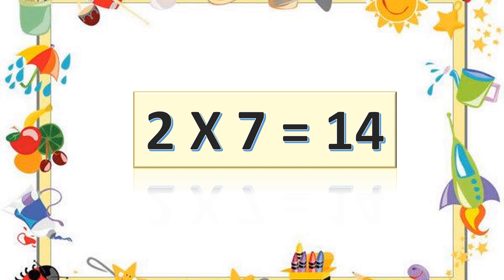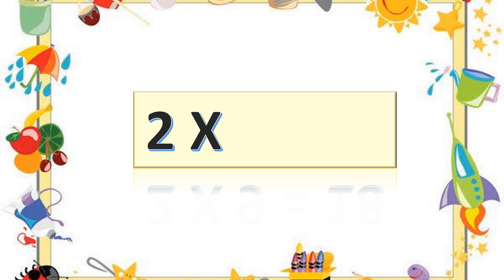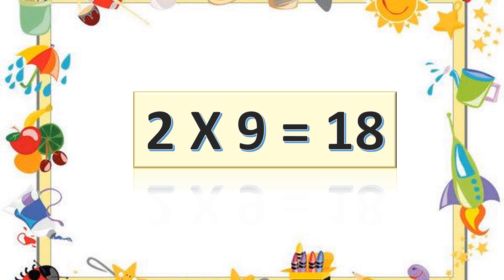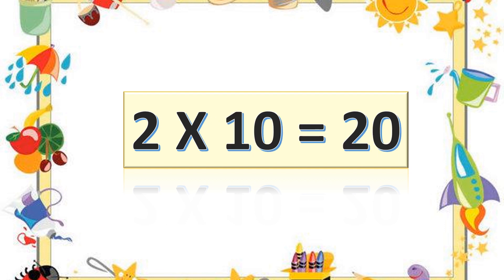Two eights are sixteen. Two eights are sixteen. Two nines are eighteen. Two nines are eighteen. Two tens are twenty. Two tens are twenty.